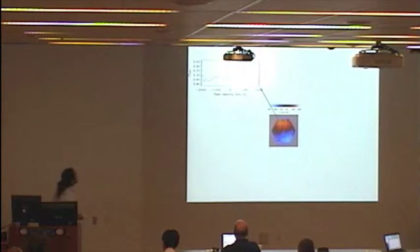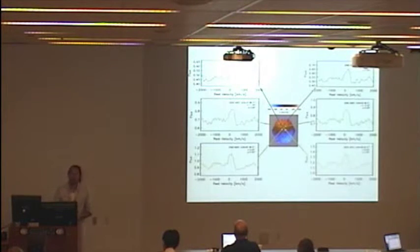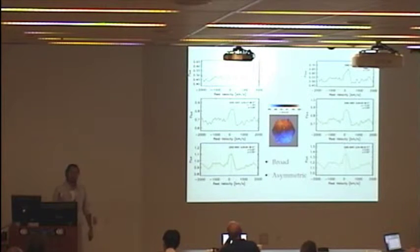What is also inconsistent with a disk of ionized gas is that the profiles of the emission lines are, well, they are interesting. So here is the O3 5007 line at six different spaxels, as indicated by the arrows. And what I want you to see is that these lines are broad, asymmetric, and or double-peaked, indicating that this ionized gas contains more than one component, which is again inconsistent with a disk of ionized gas.